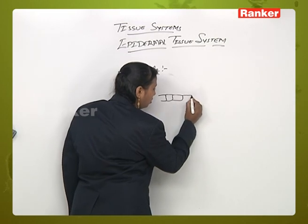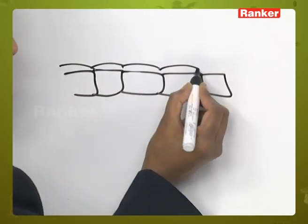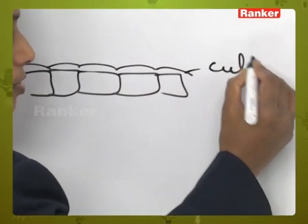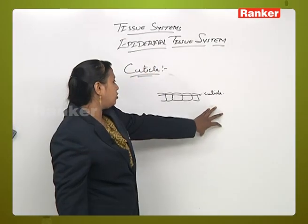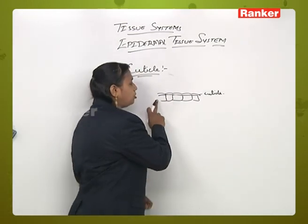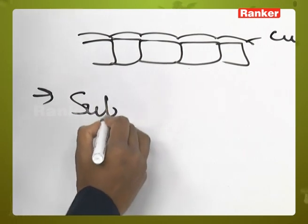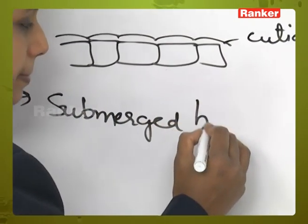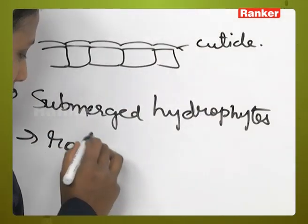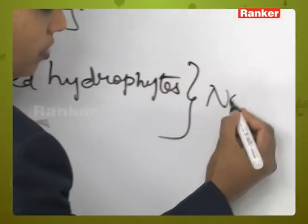The epidermis layer is covered by a specialized substance layer called the cuticle, which is made up of a substance also called cutin. Cuticle is present on almost all plants above the epidermis, but in some plants like submerged hydrophytes and in some roots, there is no cuticle present.